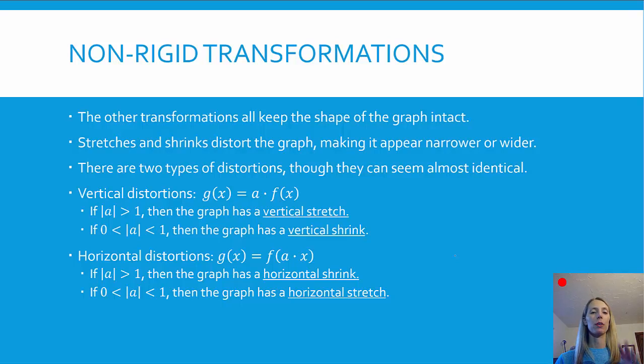Horizontal distortions are kind of the backwards of this. So that's when we have a multiplier within the function, and if that multiplier is bigger than 1 or its absolute value is bigger than 1, we say that the graph has a horizontal shrink. And if it's in between 0 and 1, we say that it has a horizontal stretch.